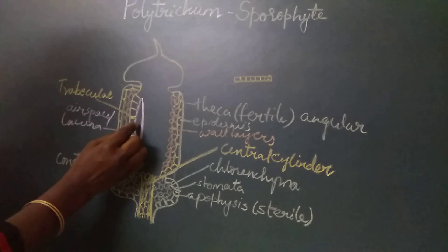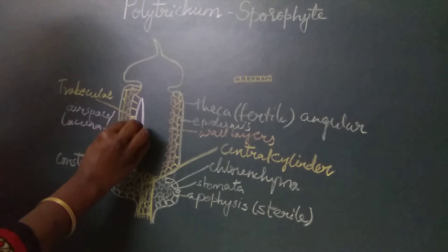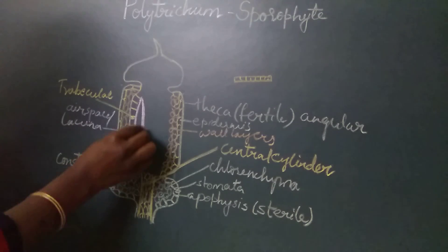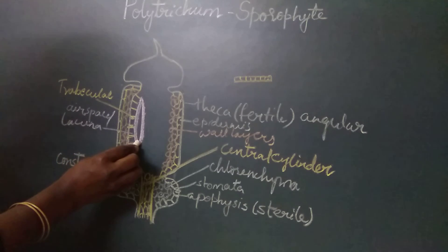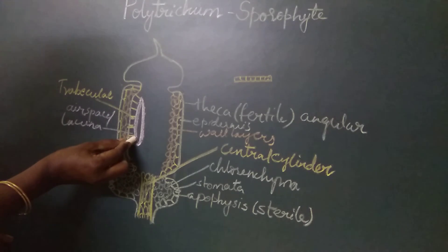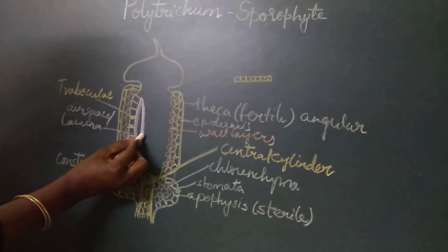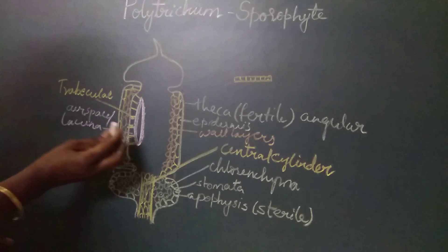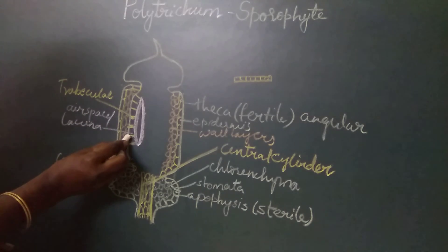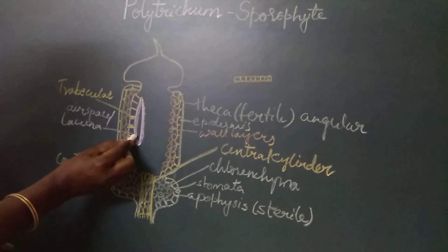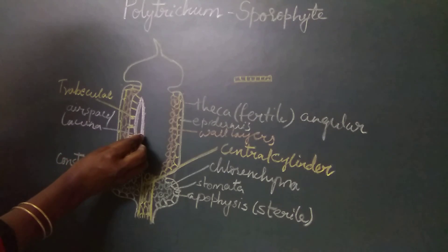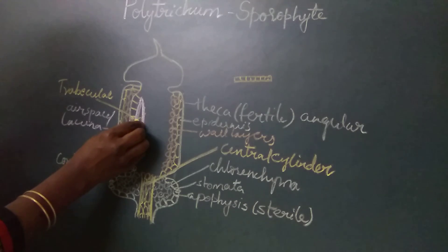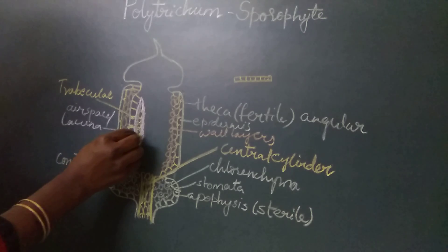Inner to the airspace there is a spore sac. This spore sac has a wall layer made up of a single layer of cells — an outer wall layer and an inner wall layer. The trabeculae are connected on one side to the wall layer and on the other side to the outer wall layer of the spore sac. The spore sac contains a single layer of cells called the archisporeal tissue.